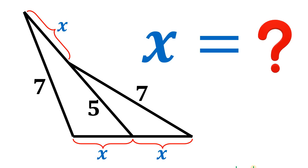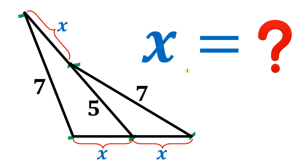Can you solve this geometry challenge? Given this figure, this segment measures 7 units, this segment measures 5 units, and this segment measures 7 units. The remaining segments are all equal and equivalent to x. Our goal is to find the value of x.